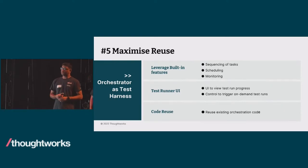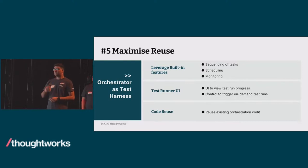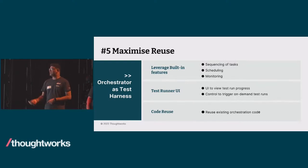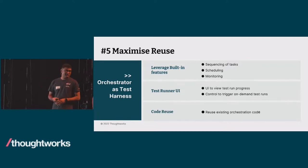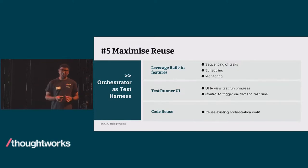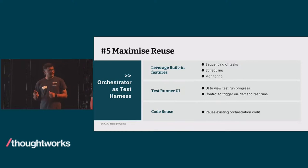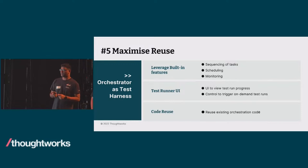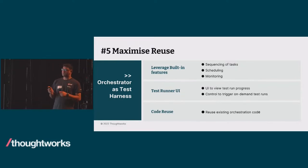Most importantly, there is maximum reuse. We utilized the orchestrator's built-in features — sequencing of tasks, scheduling, and monitoring. We used the orchestrator UI to view test run progress and whether tests passed or failed. We could also control runs on demand. The code written for production pipelines is reused, so we did not need to write a separate codebase.